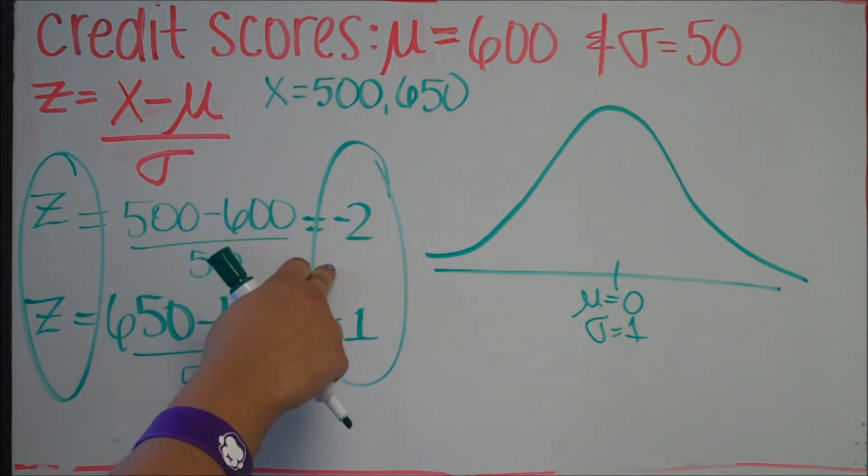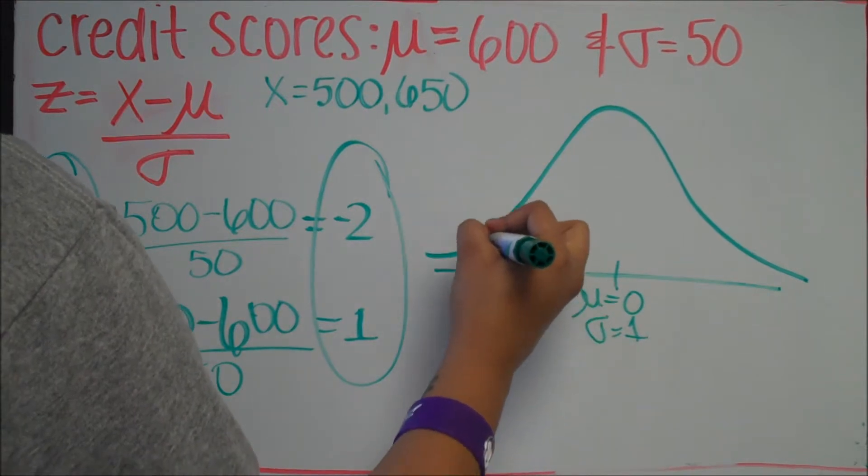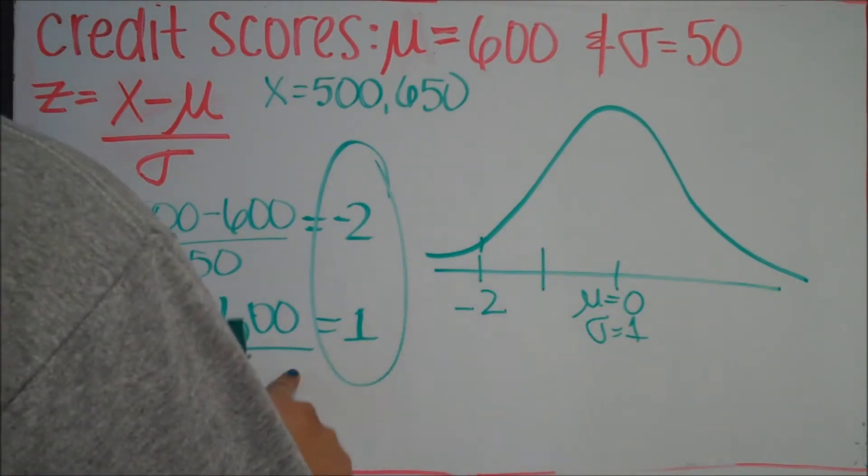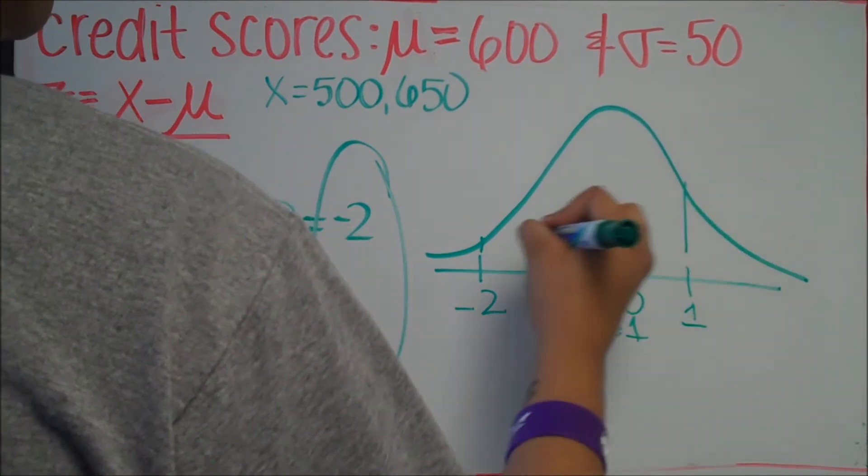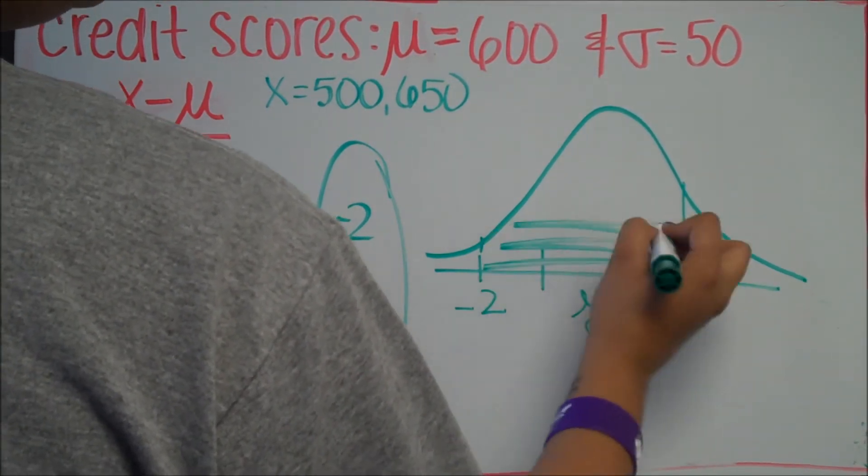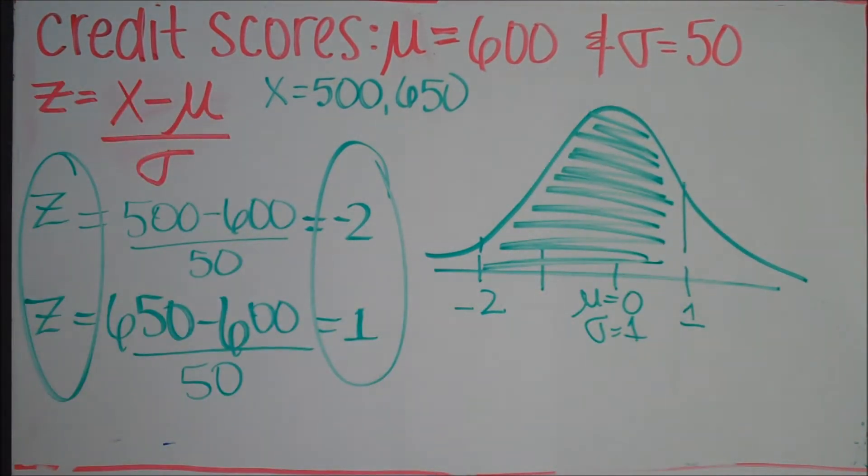So you see our first one is negative 2, so we're going to go 2 standard deviations to the left. Graph that. And 1 standard deviation to the right, since it's positive. Our problem stated that we wanted to find the area in between these values because we want to find the probability between 500 and 650. So that's what your graph looks like.